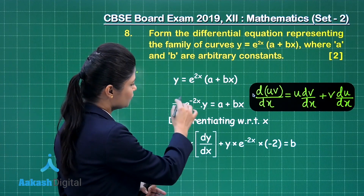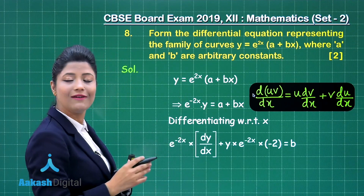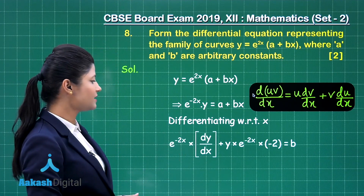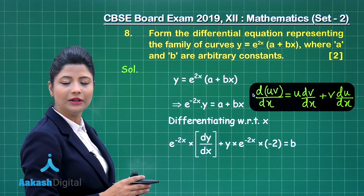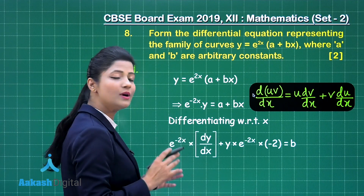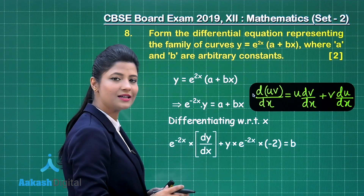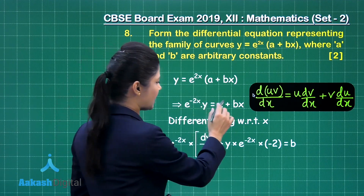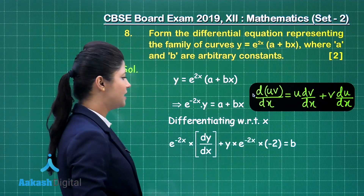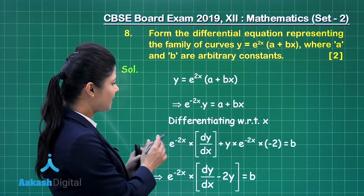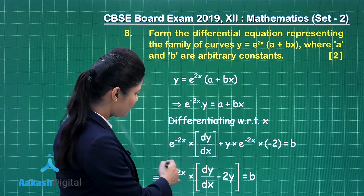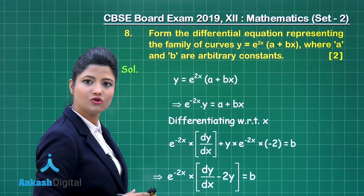Applying the product rule, that gives e^(-2x) * dy/dx + y * e^(-2x) * (-2), since the differentiation of e^(-2x) is e^(-2x) * (-2). On the right hand side, differentiating (a + bx): differentiation of a is 0 and differentiation of bx is b. Taking e^(-2x) as common, this simplifies to (dy/dx - 2y) * e^(-2x) = b.